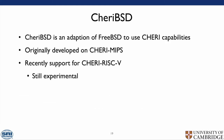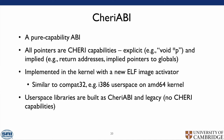What is the CheriBSD Morello project? CheriBSD is an adaptation of FreeBSD to use CHERI capabilities. It was originally developed on the CHERI MIPS platform, with recent experimental support for RISC-V. It includes the CHERI ABI — a pure capability ABI where all pointers are CHERI capabilities, both explicit ones such as void star pointers and implicit ones such as the return address. It is implemented in the kernel with an ELF image activator, similar to how FreeBSD does Compat32 for i386 userspace on an AMD64 kernel. Userspace libraries are built both as CHERI ABI and as legacy without CHERI capabilities, while binaries are built entirely as CHERI ABI where possible. Brooks Davis gave a talk at BSDCan last year for more information on CHERI ABI.